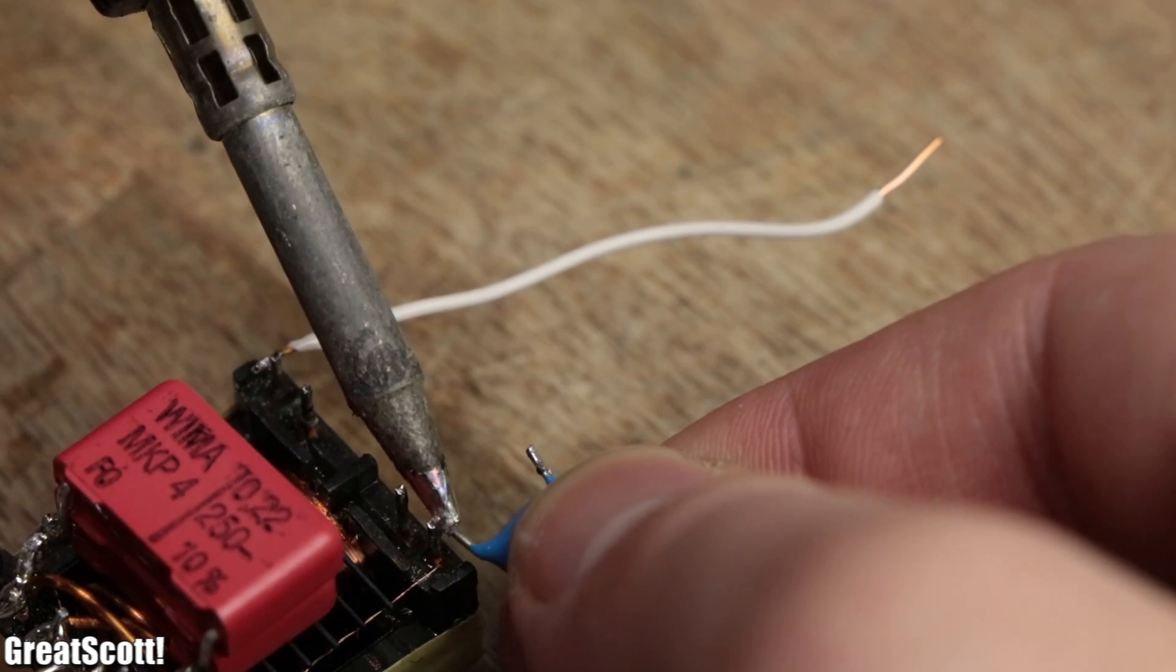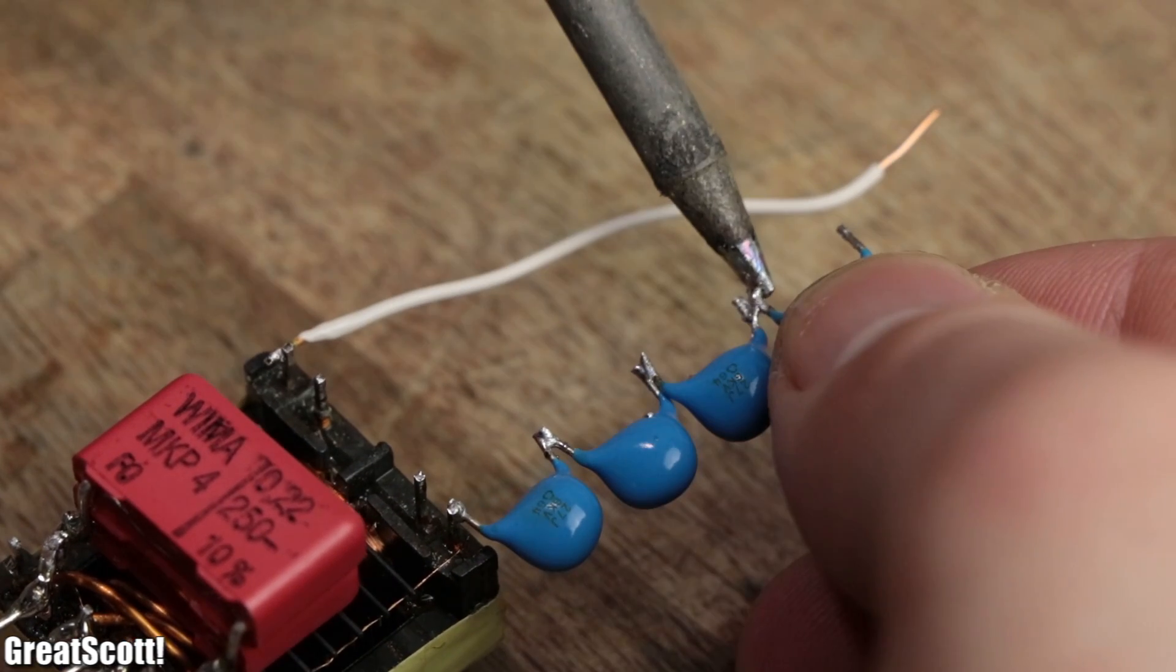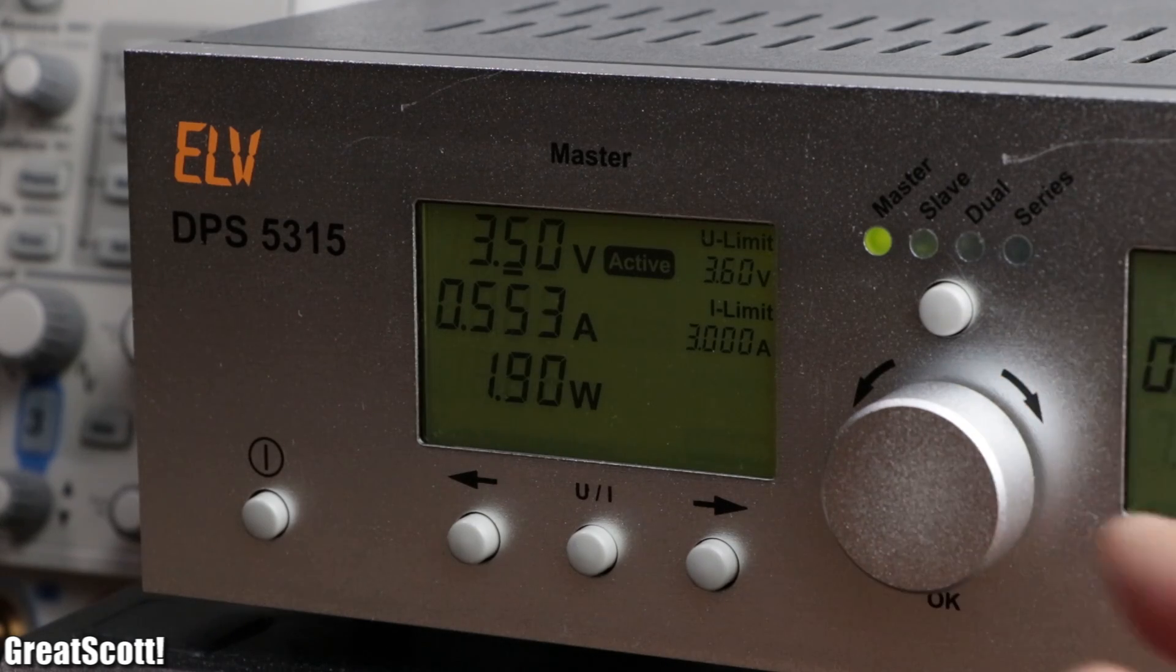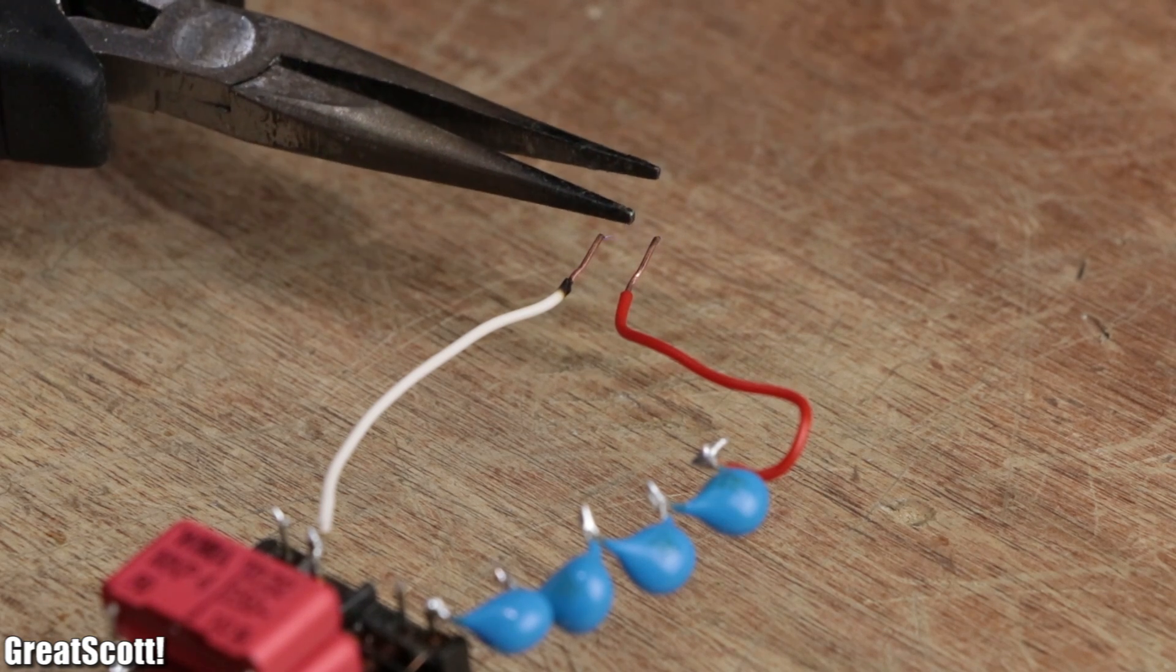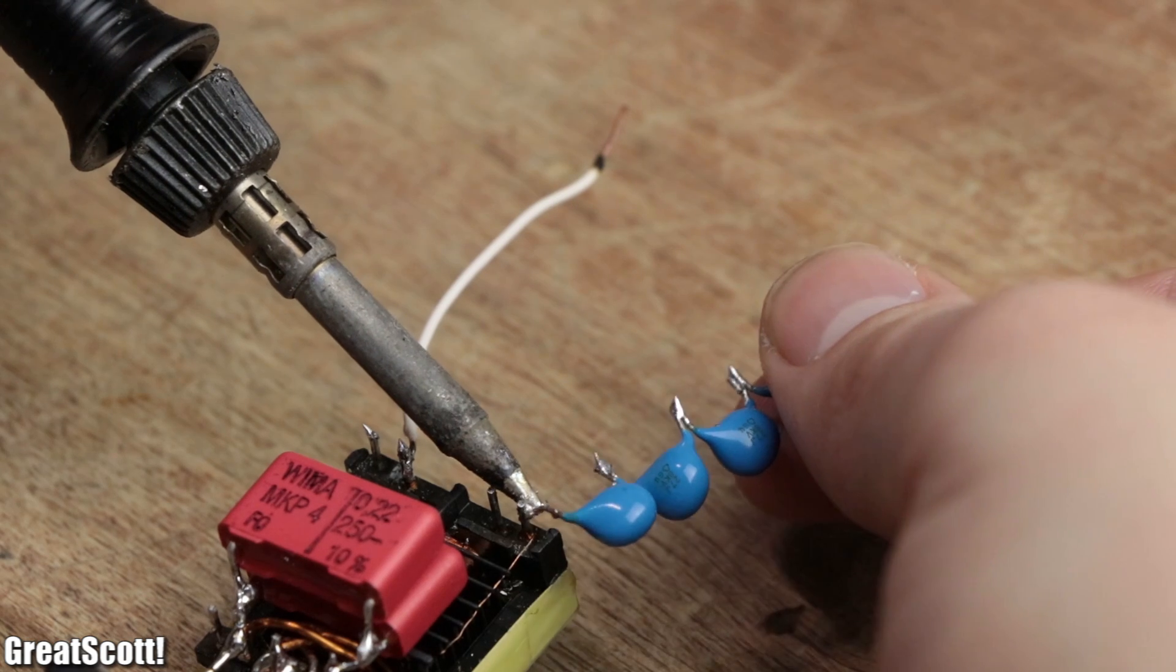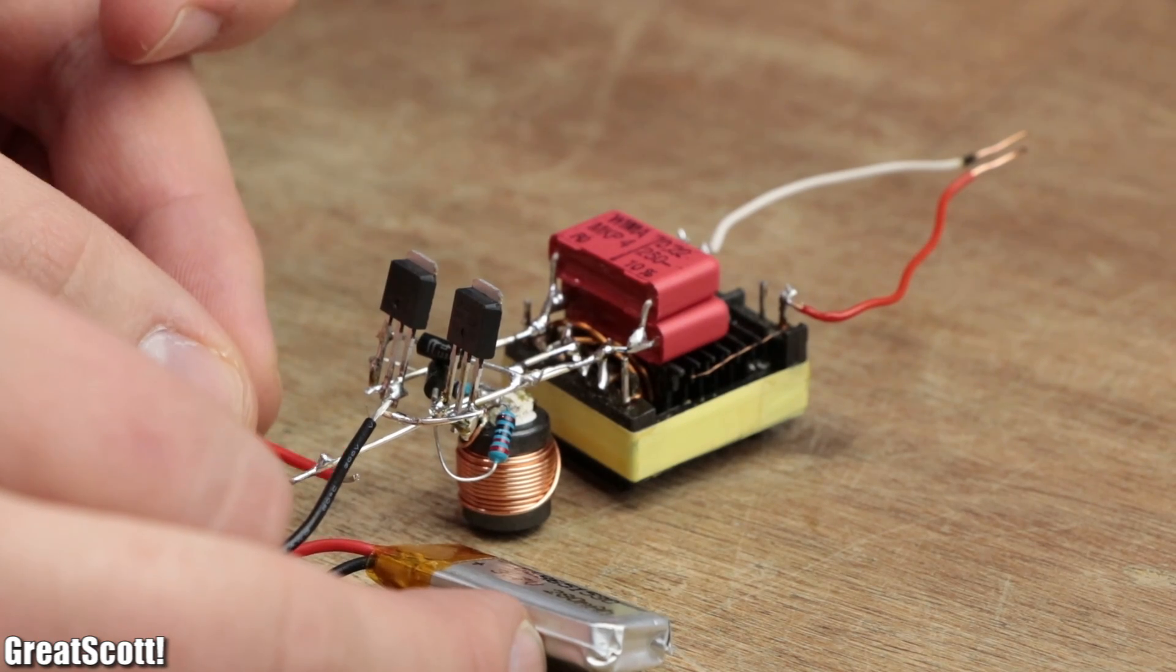To fix that, I added four 31 picofarad 6 kilovolt capacitors in series to the secondary coil to limit the output current, which clearly lowered the input current, but also made the electric arc a lot weaker and pretty much unusable. So we have to stick to the high current draw, which my original plant LiPo battery cannot provide.